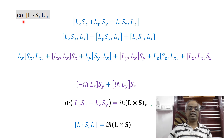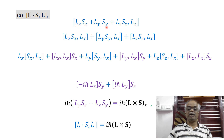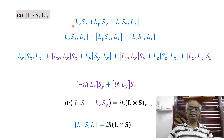First we will take Part A: the commutation of L·S with L. L·S can be written as LX·SX + LY·SY + LZ·SZ. Remember, here we have only the X, Y, and Z components because it is a dot product — only the same components of L and S appear; others are zero.